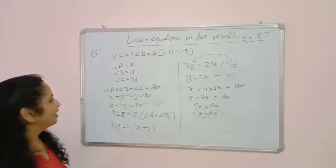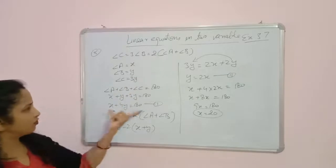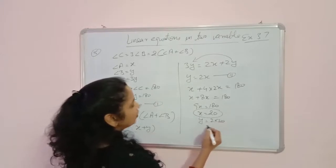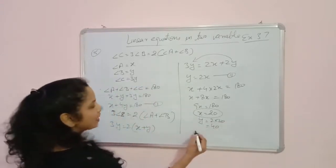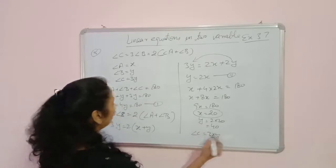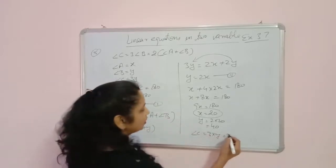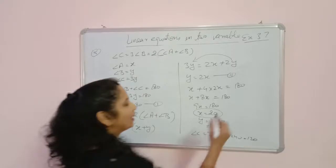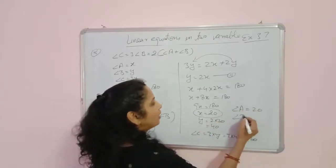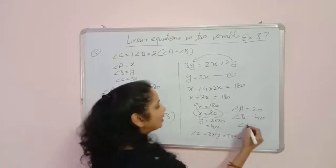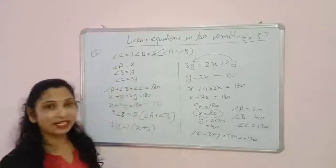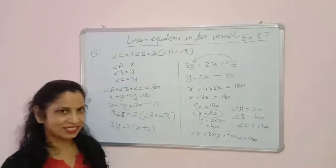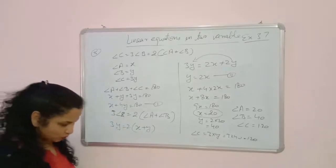We can verify: angle A equals 20, angle B equals 40, angle C equals 120. Sum: 120 plus 40 plus 20 equals 180 degrees. Our answer is correct. So angle A equals 20°, angle B equals 40°, angle C equals 120°. This was question 5.